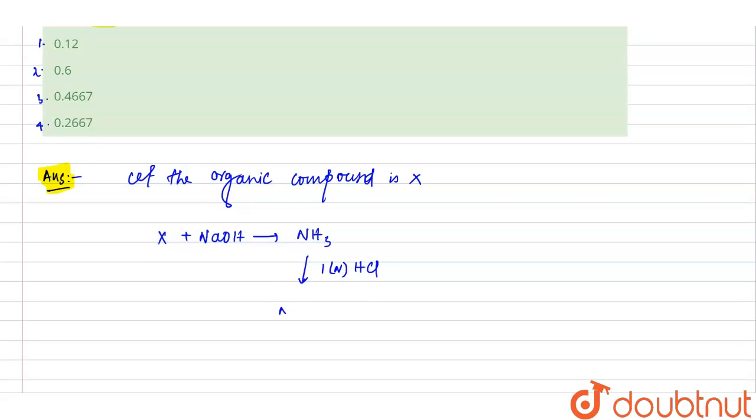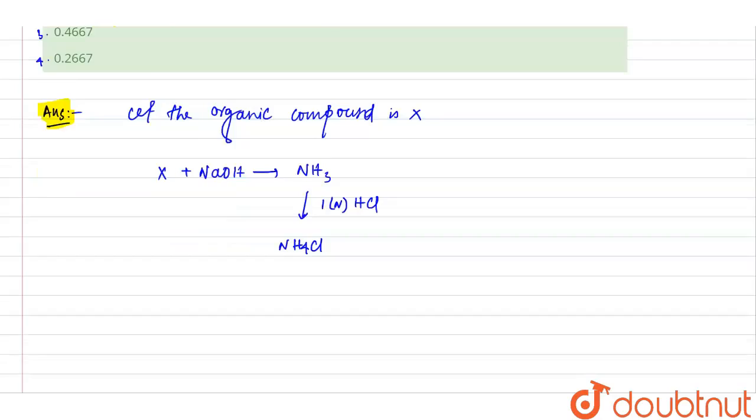Now, first let's write the reaction. Let the organic compound is X. So X plus NaOH gives NH3 which again reacting with one normal HCl and we will get NH4Cl here, ammonium chloride.